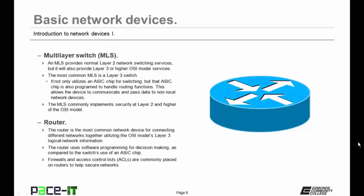MLSs are not very common in small networks due to their expense. Then we have the router. The router is the most common network device for connecting different networks together, utilizing the OSI model's Layer 3 logical network information. Unlike the switch, which uses an ASIC chip, the router uses software programming for decision making. Firewalls and access control lists are commonly placed on routers to help secure networks.